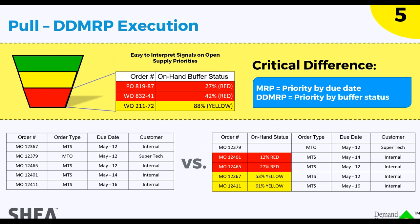Here's the other big change. Because we have buffers, every part can give us a color-coded status. If the planning status is red — not good. Yellow — we're probably good. Green — we're fine, don't need to order yet. But if it's red, make sure orders are placed. You can see the degree of penetration within individual buffers. If one part is at 27% and another at 42%, which comes first? 27%. This is called relative priority. It gives us the ability to prioritize planning and execution from a date-based system to a priority color system.